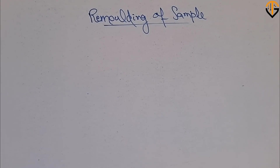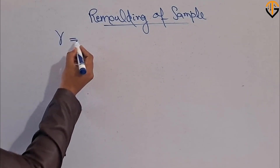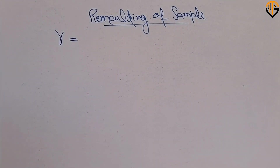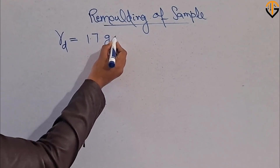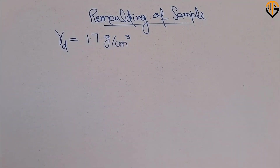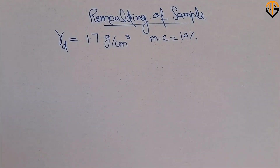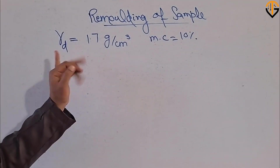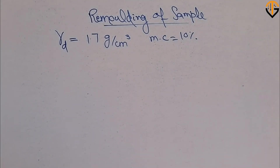For remolding the soil sample, we must have the density of the soil sample. It can be gamma bulk or dry density. Let's say we have 1.7 gram per centimeter cube dry density from the field, and we have the moisture content — let's say 10%. Now, the question arises: how do we obtain the dry density and moisture content?